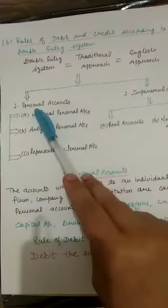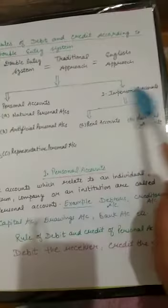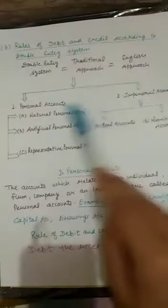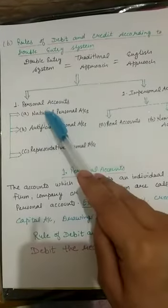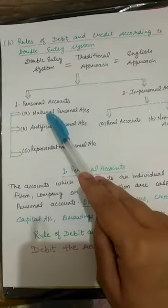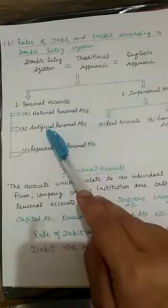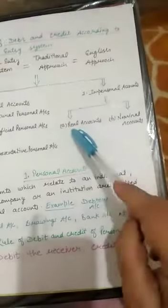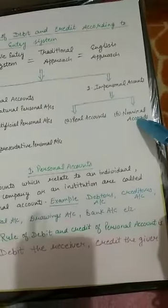Personal account is further subdivided into three parts: natural personal accounts, artificial personal accounts, and representative personal accounts. Impersonal accounts are further divided into two parts: real account and nominal account.